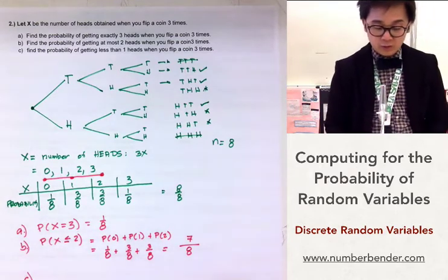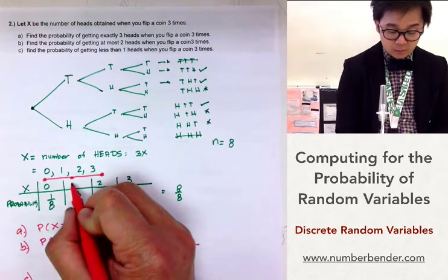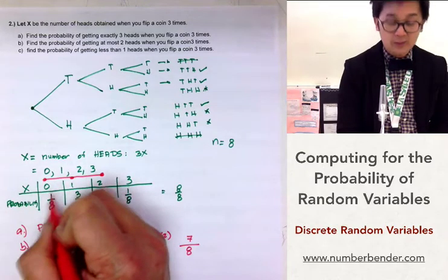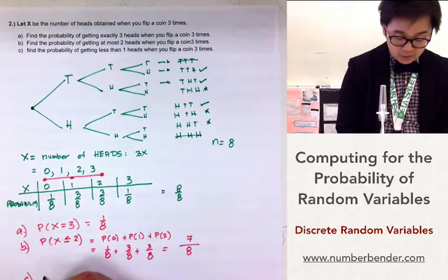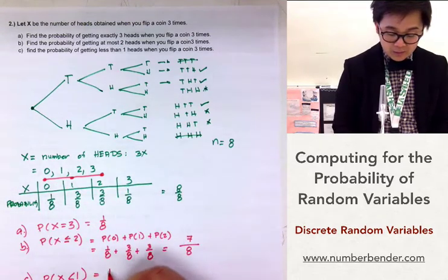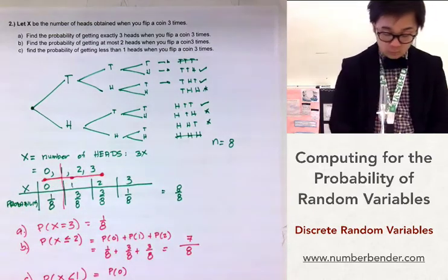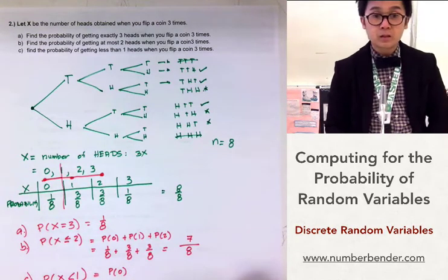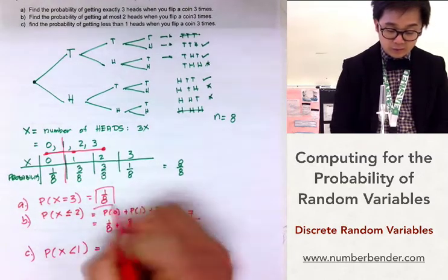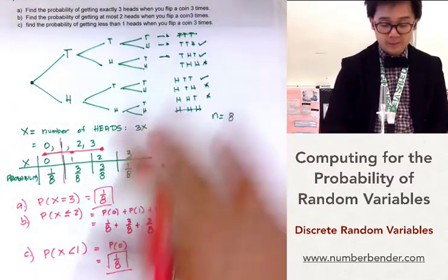For part C, we find the probability of getting less than one head. Since we need strictly less than one, only P(x = 0) is included — one is not. So P(x < 1) = P(0) = 1/8. To summarize, the answers are: A = 1/8, B = 7/8, and C = 1/8, all found using the tree diagram and probability model.